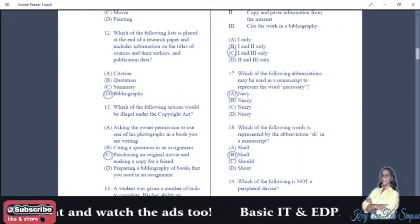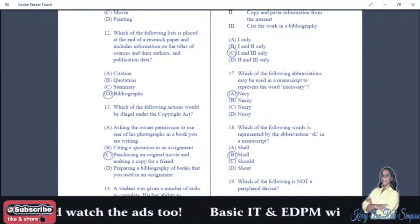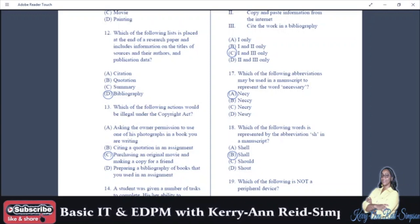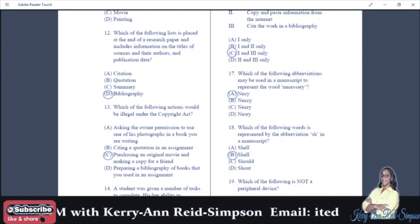Number 13: which of the following actions would be illegal under the Copyright Act? A: asking the owner permission to use one of his photographs in a book you are writing, B: citing a quotation in an assignment, C: purchasing an original movie and making a copy for a friend, D: preparing a bibliography of books that you used in an assignment.